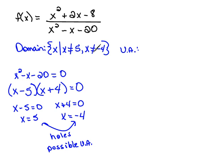Now again, these are our potential vertical asymptotes, but we won't know until we actually simplify our function and make sure that this is written in lowest terms.